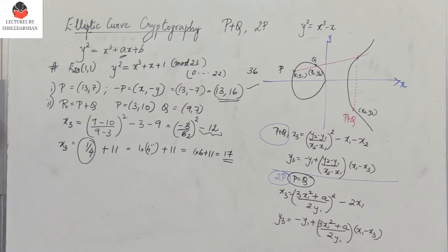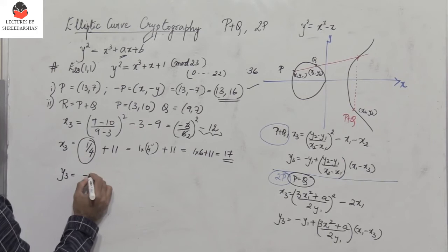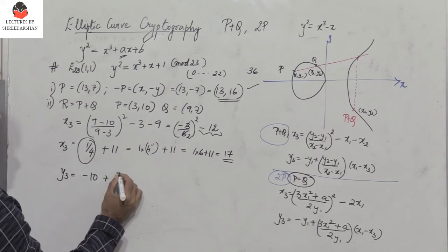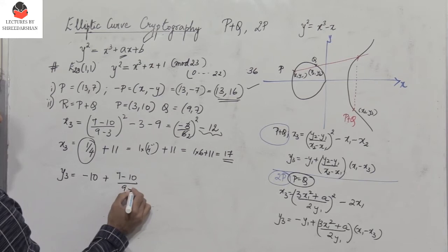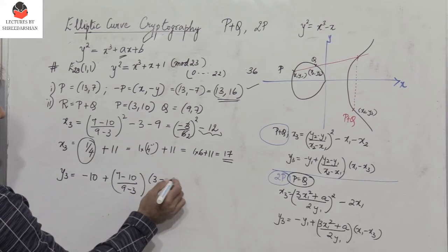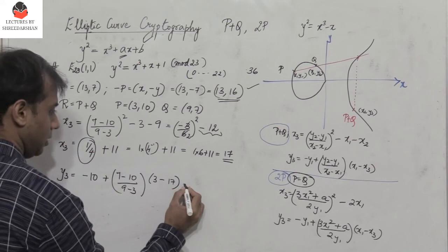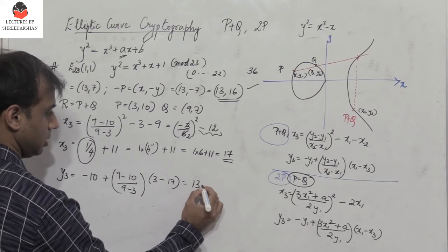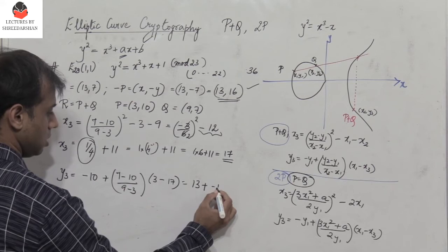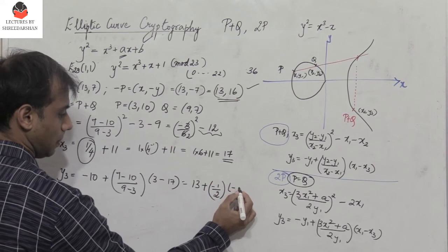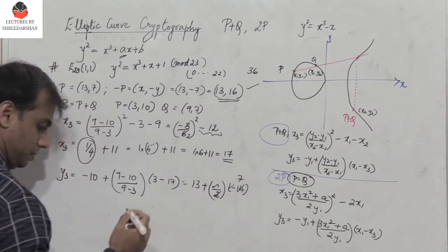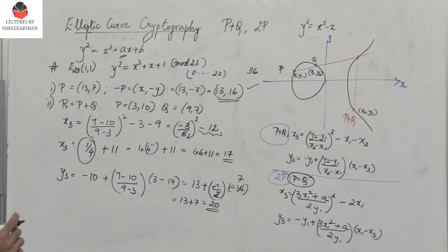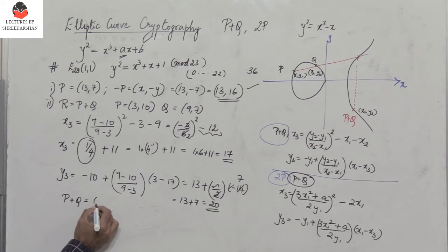For y3: minus y1 is minus 10, plus ((y2 minus y1) over (x2 minus x1)) into (x1 minus x3). That is minus 10 plus (minus 1 over 2) into (3 minus 17). Minus 10 in mod 23 is 13. The expression (minus 1 over 2) into (minus 14) equals 7. So y3 equals 13 plus 7 equals 20. Therefore the coordinates of P plus Q are (17, 20).